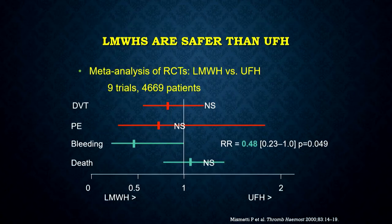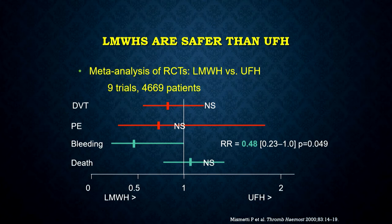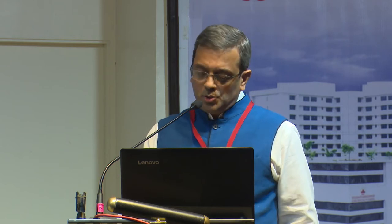Between unfractionated and low molecular weight heparin, data from several randomized studies involving almost 5,000 patients showed that LMWH compared to unfractionated heparin gave an advantage in terms of DVT and PE prevention with lesser risk of bleeding. Still, some cohorts need unfractionated heparin — those with renal issues where LMWHs cannot be used. Otherwise, almost all of us have switched to LMWHs.